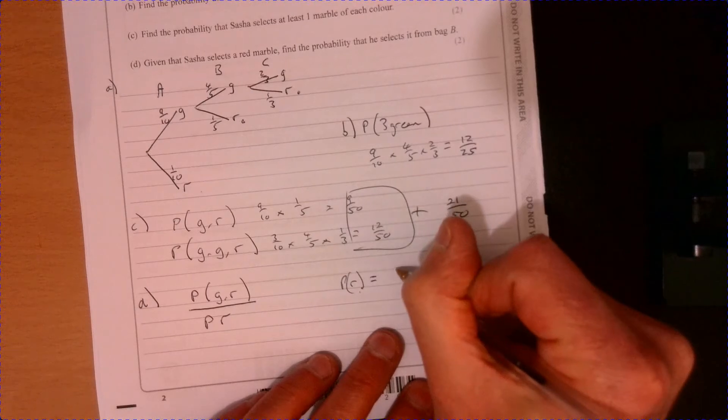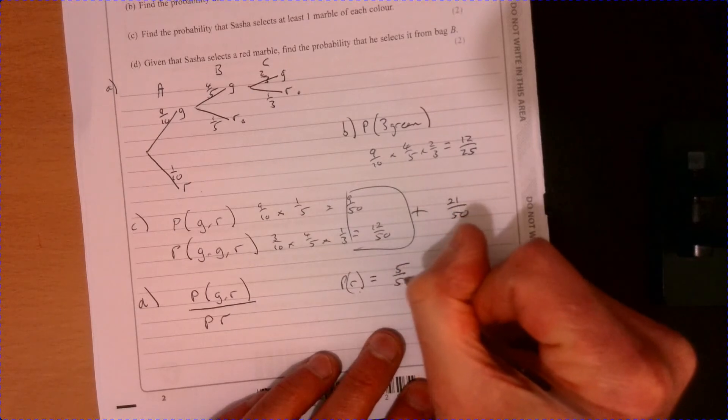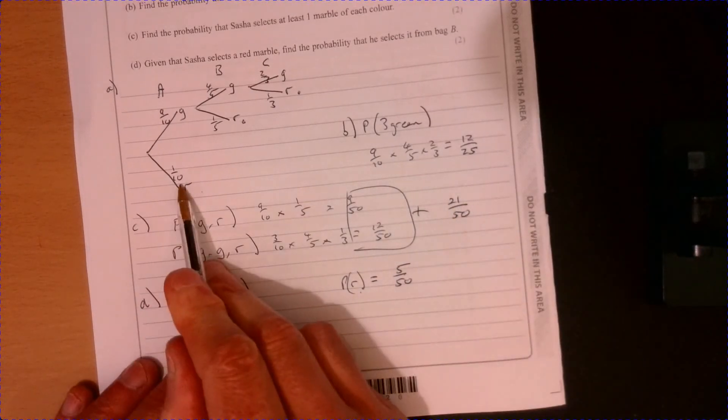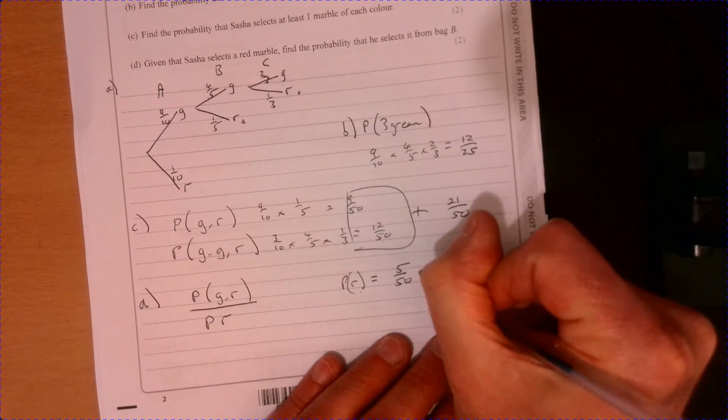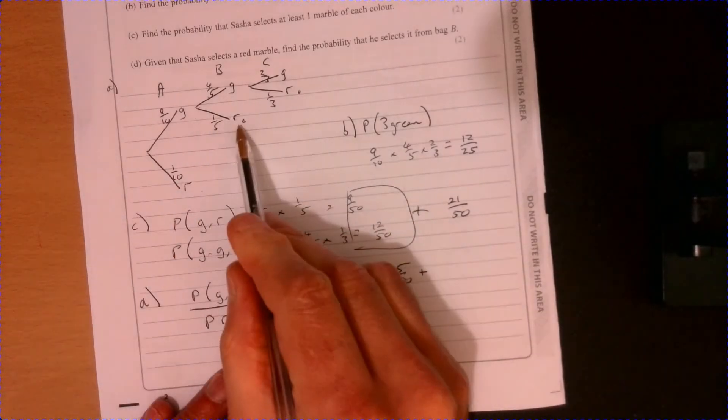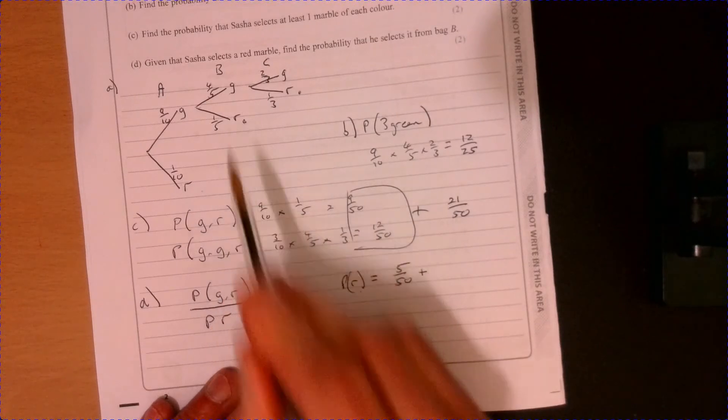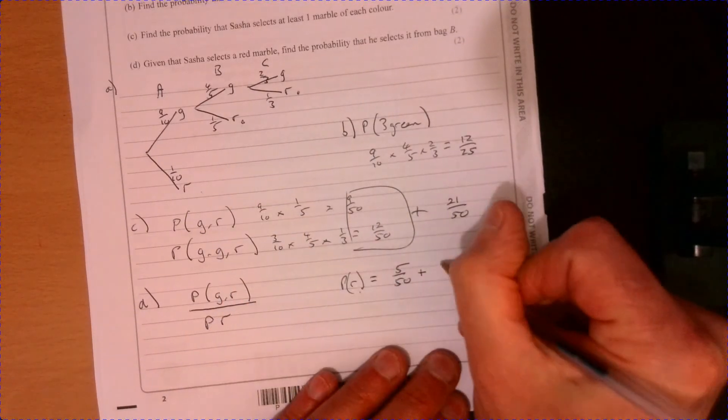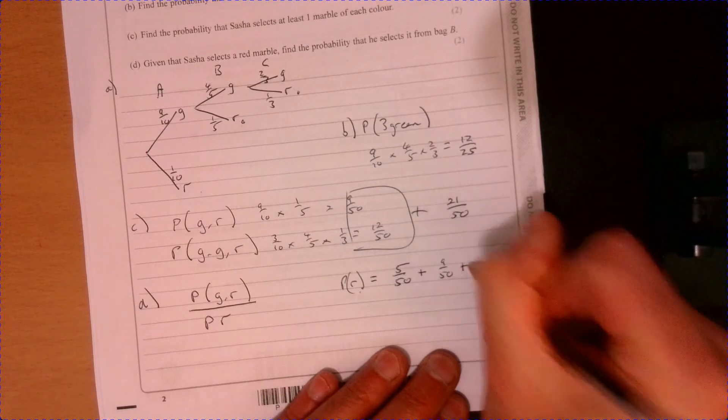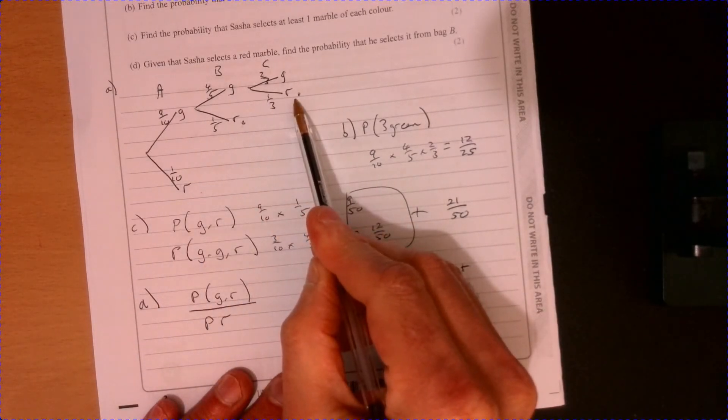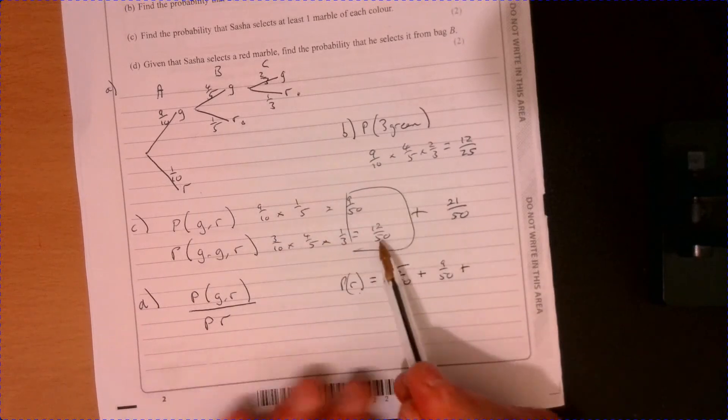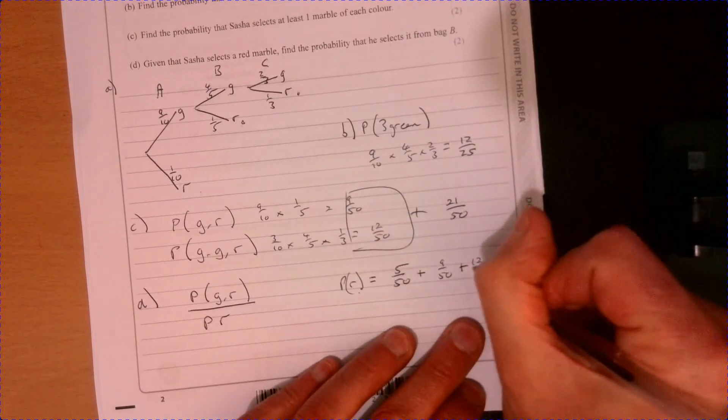So we just need to think about what's the probability that you get a red marble. Well, the probability that it's a red marble is I can do five over 50. That's one over 10. I've just changed it so it's going to be the same denominator all the way through. And then this one. So I've already got that. That's nine over 50. And then this one.